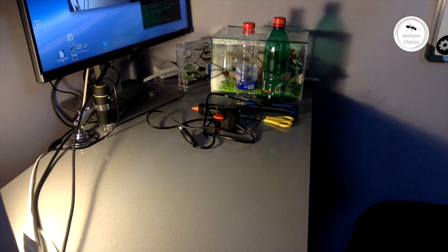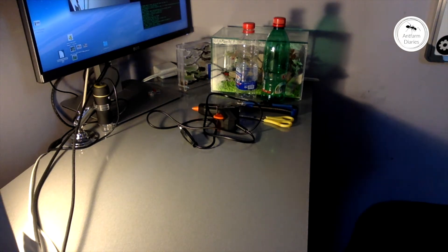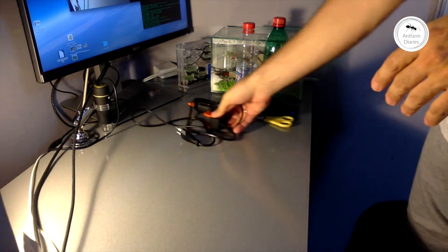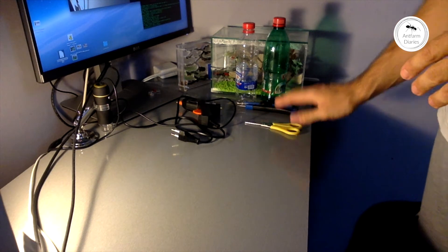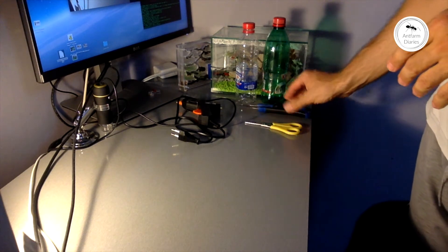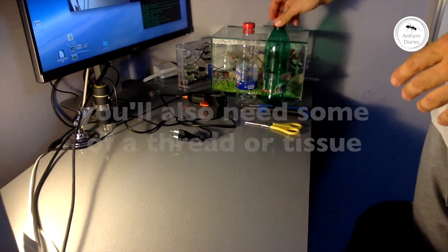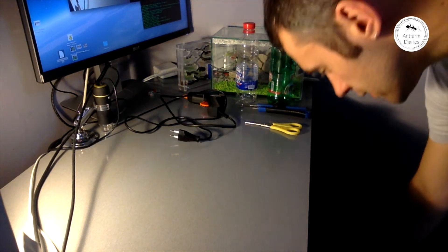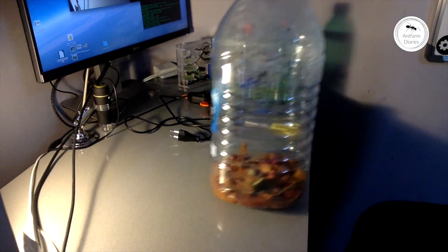Hello my friends, today I will show you how to create a fruit flies generator to feed your ant colonies. For this project we will need scissors, a knife, glue gun, two small pet bottles, and the fruit flies generator itself.